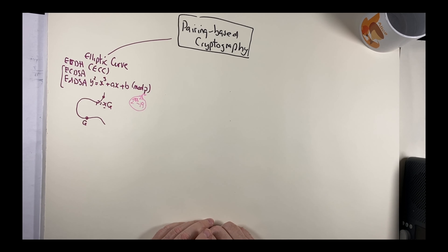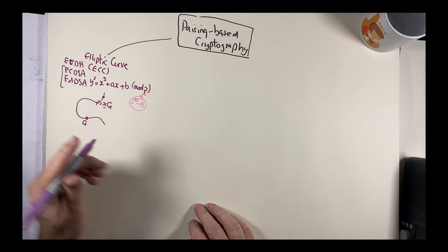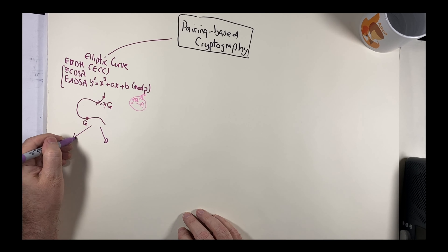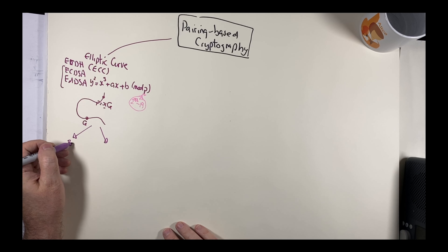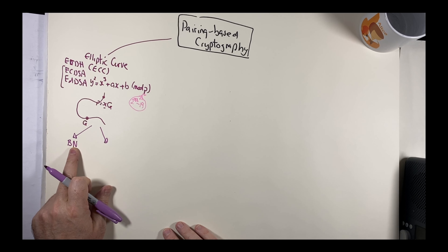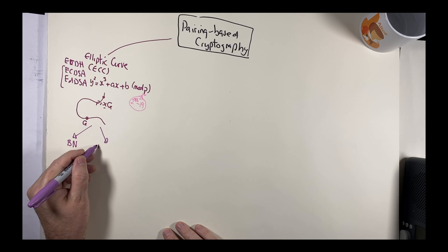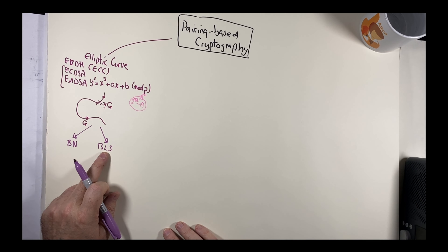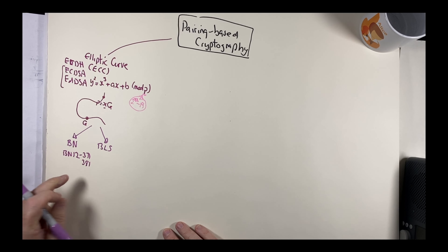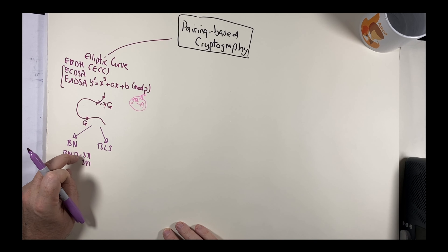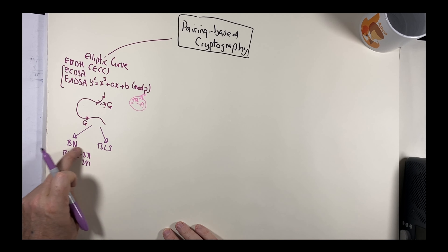For pairing-based cryptography we use special curves. The two main families are Barreto-Naehrig (BN) and BLS curves, which stands for Barreto-Lynn-Scott. Typical curves are named BN12, and with sizes 371 and 381, referring to the size of the prime numbers used inside the curve. The larger the number, the larger the prime and the more security it provides.